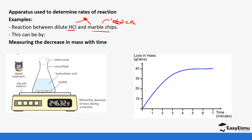This graph shows that at the start of the experiment, the time is zero and the mass is very high — no loss has happened. But as the reaction continues, we are losing a certain amount of mass of the reactants as time continues. We then get to a point where the reaction is complete, so the mass is not being lost anymore.